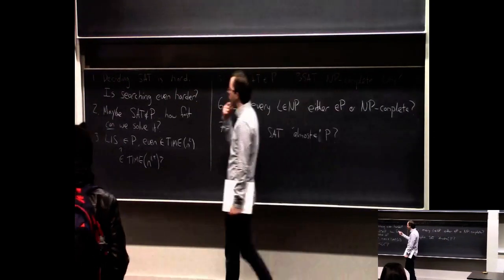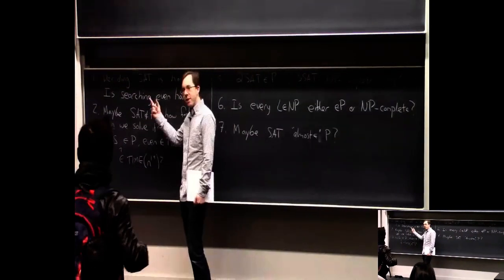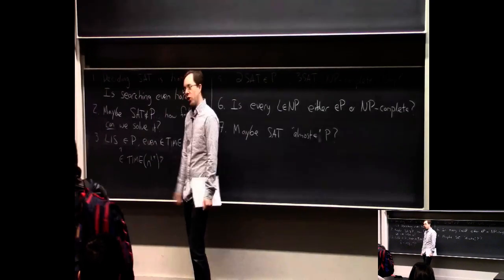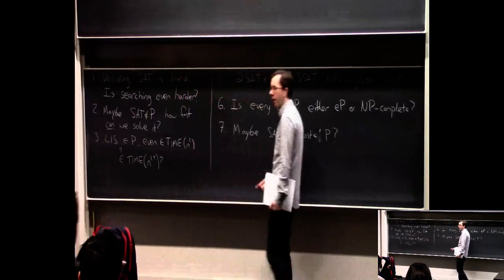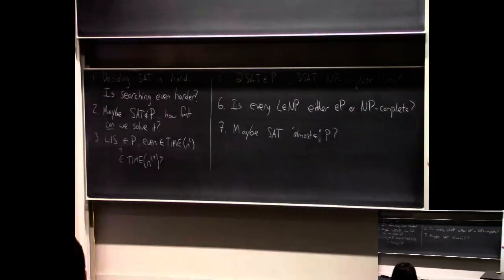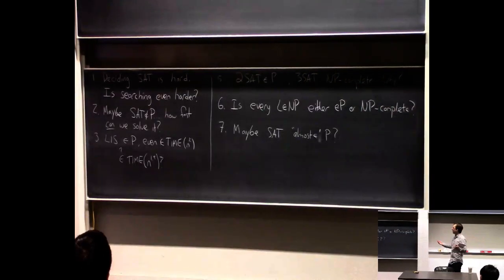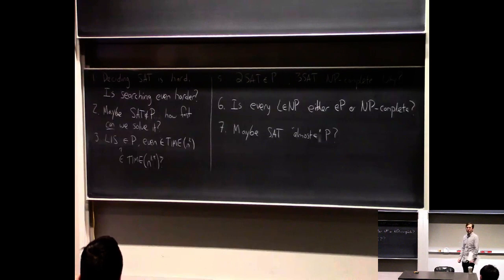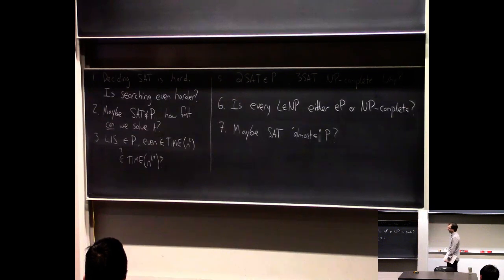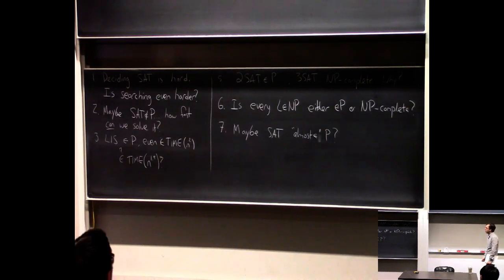We're also not done if we classify a problem as NP-complete, because we still don't know the best algorithm for it. You can have the same question for things in polynomial time. We classified longest increasing subsequence as being in P and gave an n-squared time algorithm. But can you do it in time n to the 1.9? This is also a complexity problem — trying to prove a lower bound — and we'll talk about this later in the course.